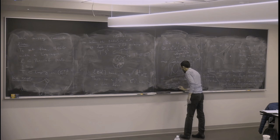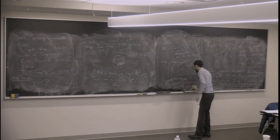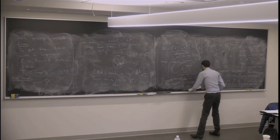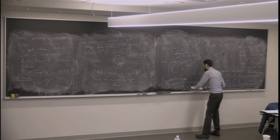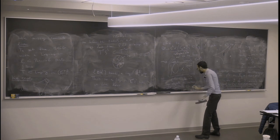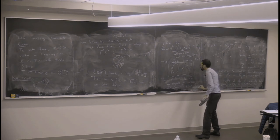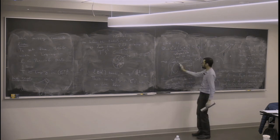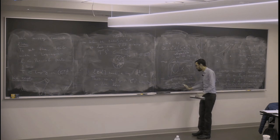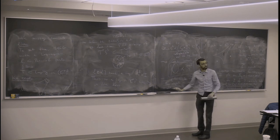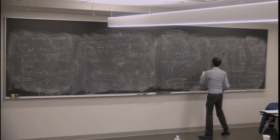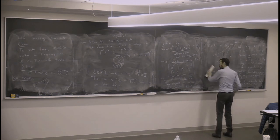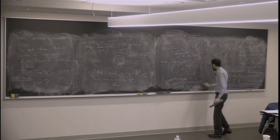Local systems on these things — there's exactly one direction of local systems like a C* worth of these — so the C* family of these objects are mirror to the coordinate lines minus the origin.